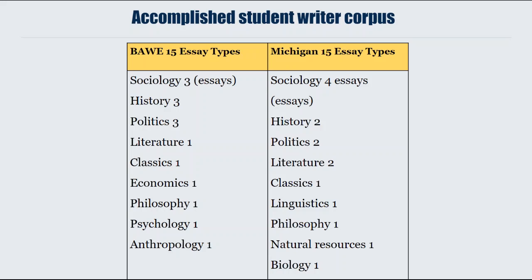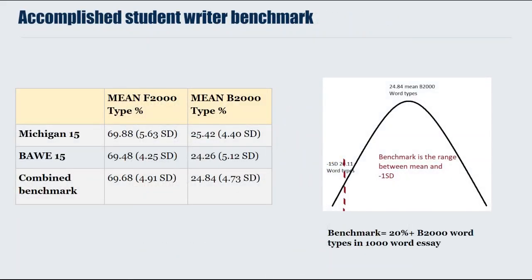They were all standardised to a thousand words, because when you measure word types, text length is a problem. What I basically found was, when you look at the Michigan fifteen essays and the Bohr fifteen essays, they have quite a similar average number of word types of the most frequent kind — listed as F2000 — and quite a similar proportion of the less frequent kind, the beyond-2000. When you put those together to create what I've called the combined benchmark, you get roughly 70% of those word types among the most common 2000 word families in English.